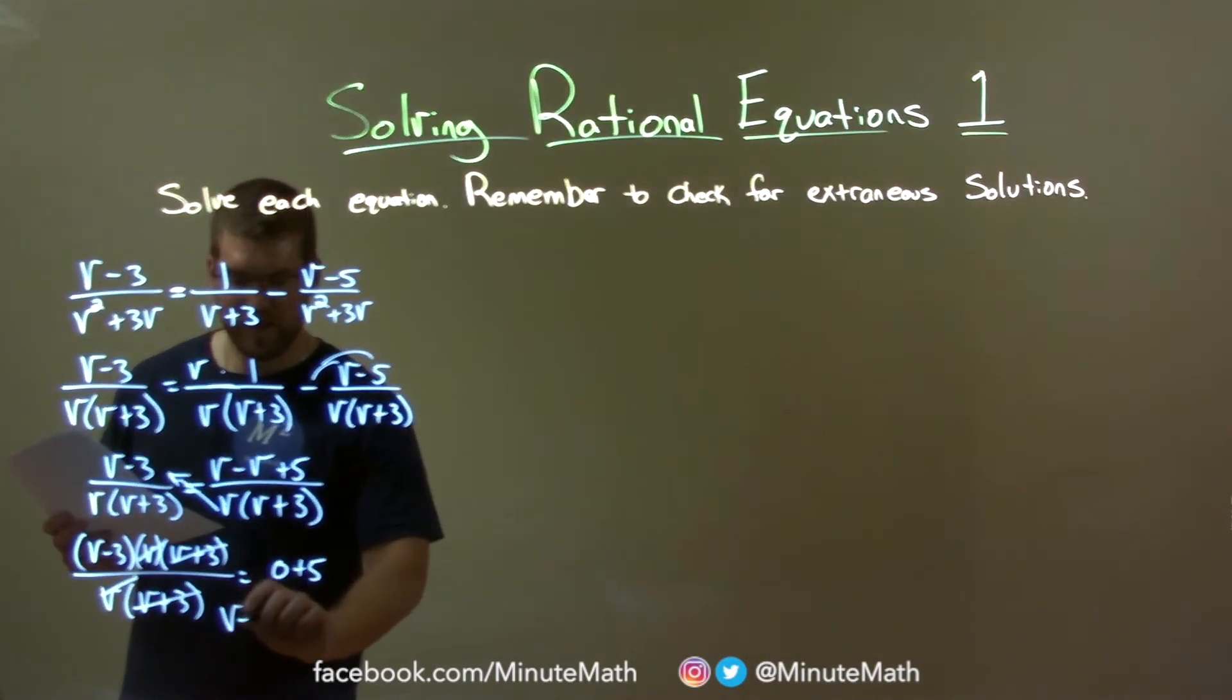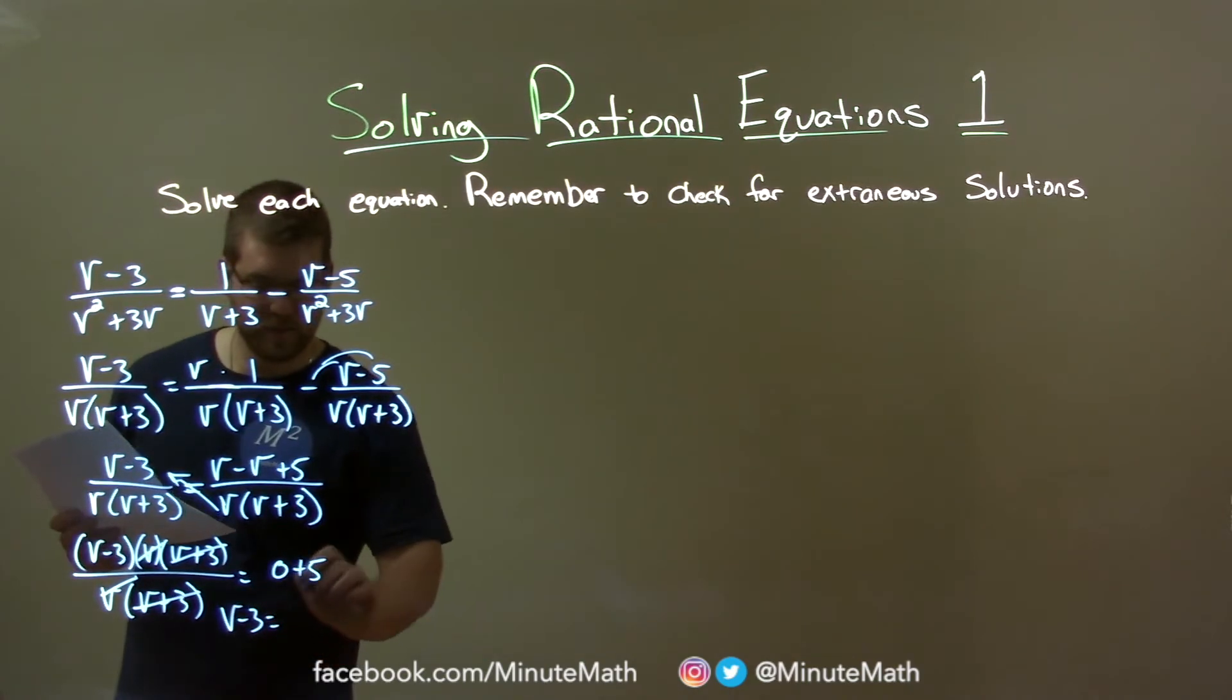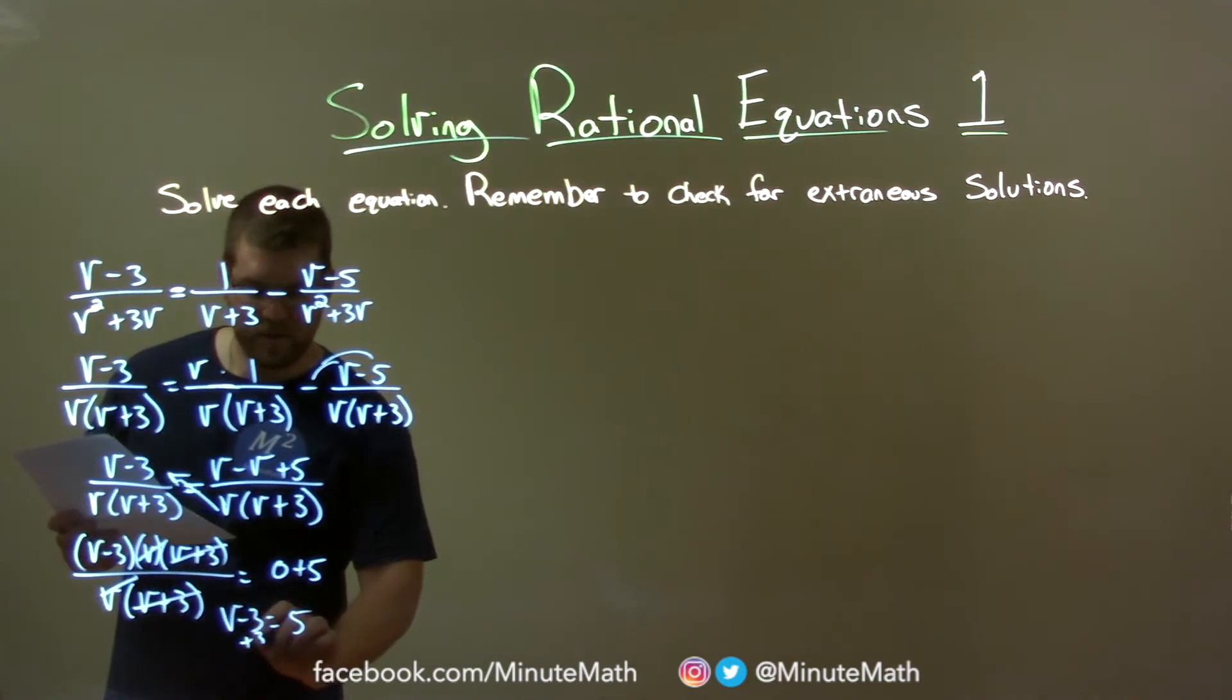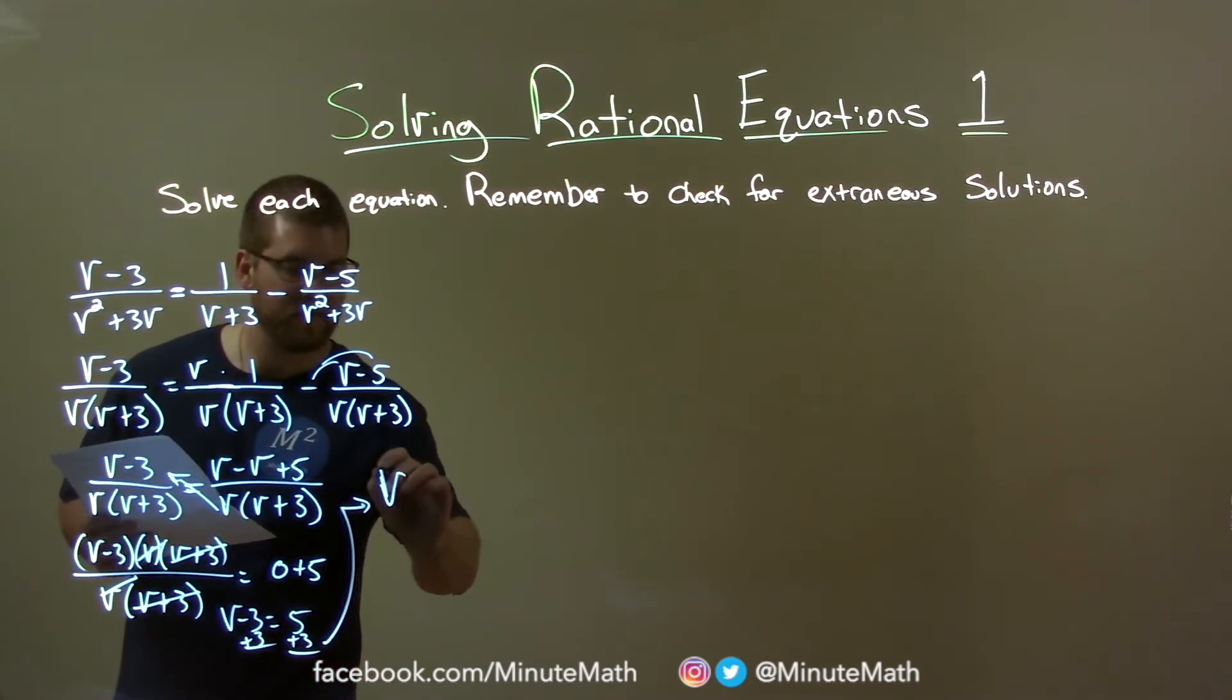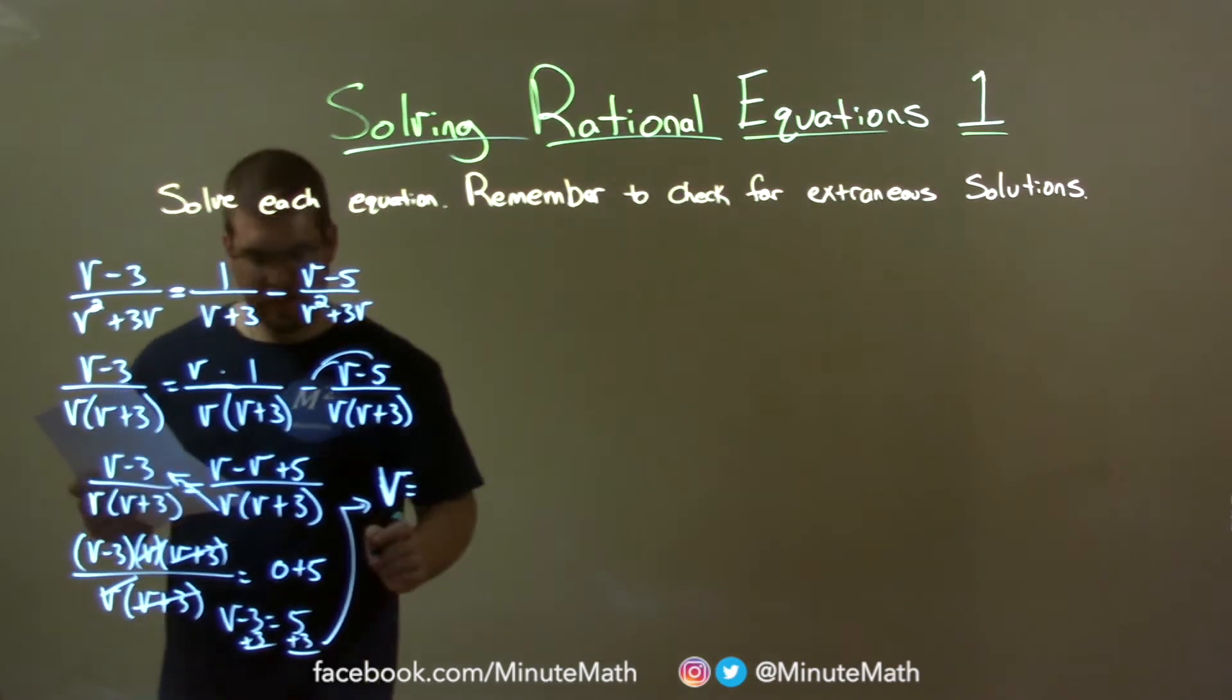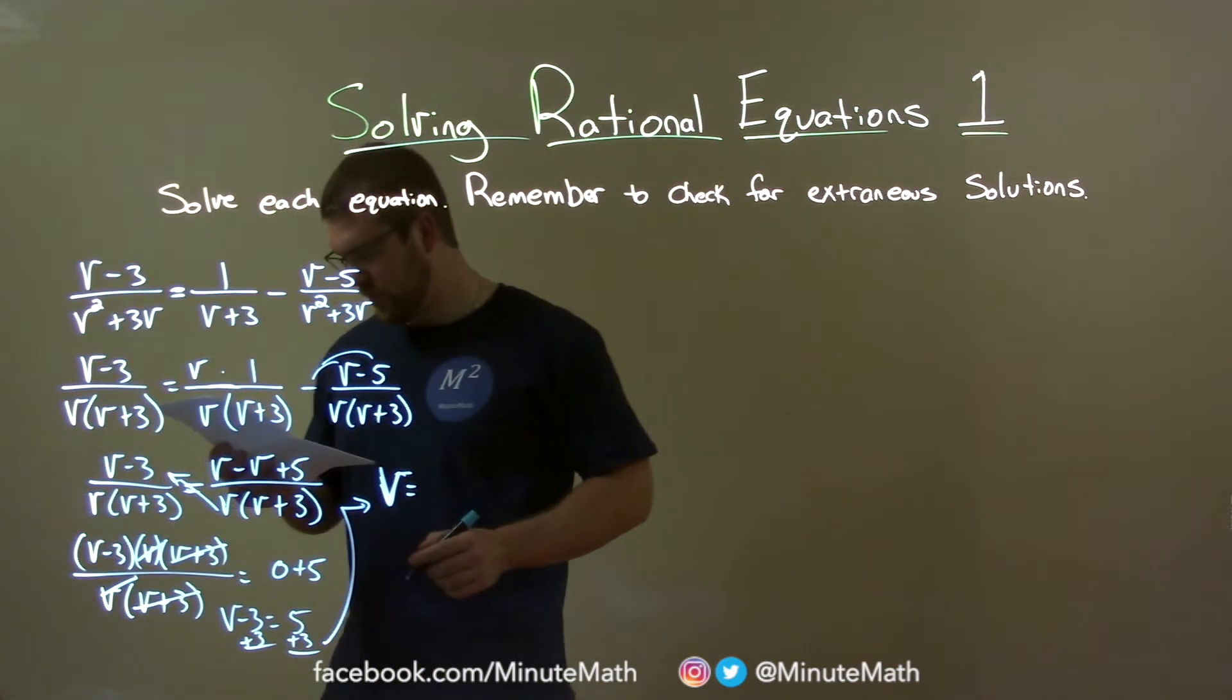We have just v minus 3 left over, equals 0 plus 5, which is 5. Add a 3 to both sides, and v is all by itself. We're going to write it right here. So that's v, bear with my v's here, v's equal 5 plus 3, which is 8.